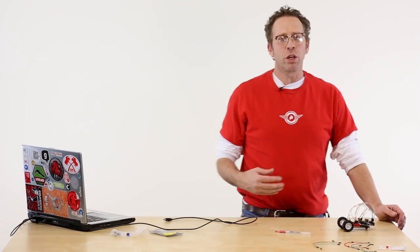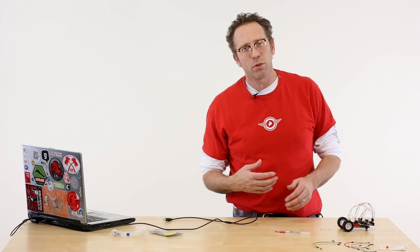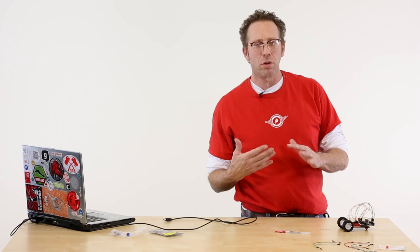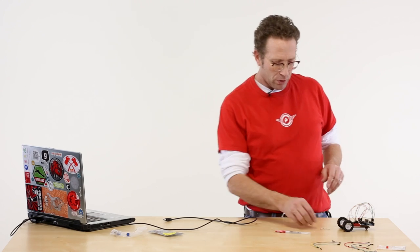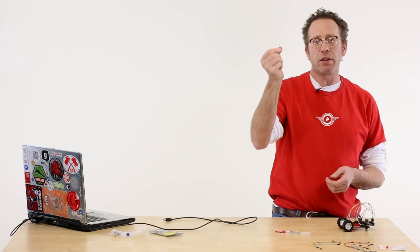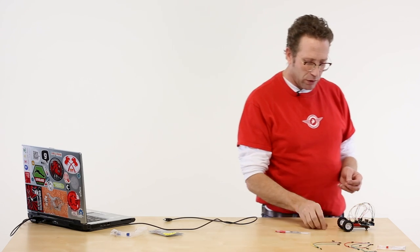So if we want to start looking at how to get more autonomous behavior out of these robots and how to integrate sensors, I'm actually going to take a more difficult sensor to work with. I took a simple light sensor right here and I got a 10K resistor.